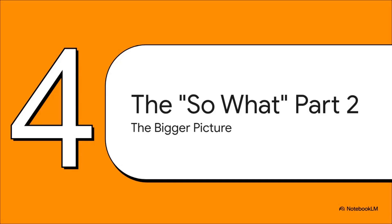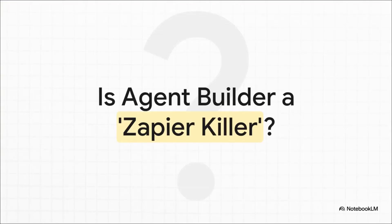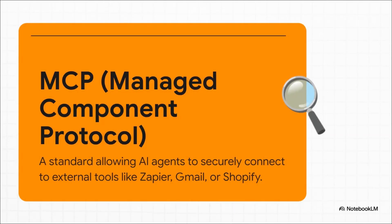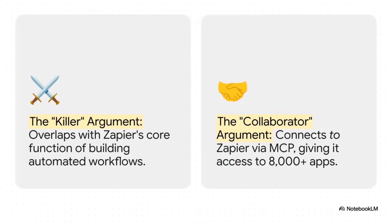Connecting to the outside world brings us to the bigger picture: where does Agent Builder fit in the tech world right now? As soon as it was announced, people asked whether it makes Zapier obsolete — Zapier being the undisputed king of connecting apps. To answer that, you have to understand MCP: think of it like a universal plug — a standard that lets different apps talk securely. Agent Builder uses MCP to connect to things, and Zapier has also built an MCP server. So they're not really competitors — it's more accurate to call them collaborators. Agent Builder creates the complex conversational AI brain; Zapier provides connections to thousands of other apps. You can actually use Agent Builder to call a Zapier workflow, giving your agent access to everything Zapier can do. It's the best of both worlds.